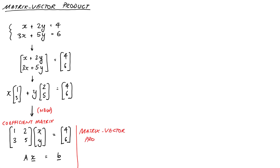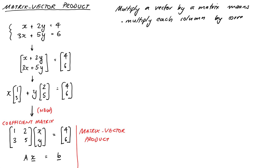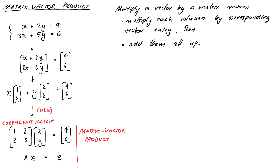So essentially, when we multiply a vector by a matrix, we just multiply each column of the matrix by the corresponding entry of the vector, and then we add them all up. The fancy name for this is called taking a linear combination of the columns of the matrix A. The only caveat is that the number of entries in the vector x must be the same as the number of columns of the matrix A. Otherwise, the matrix can be whatever size it likes.